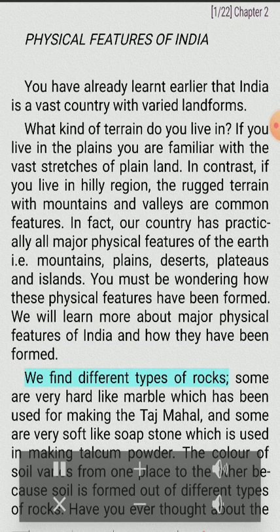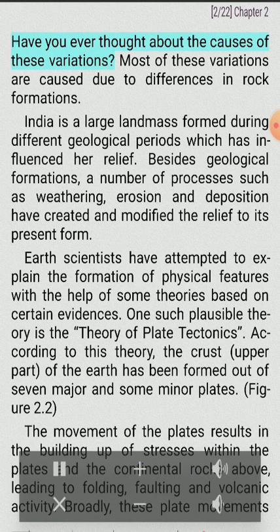We find different types of rocks. Some are very hard like marble, which has been used for making the Taj Mahal, and some are very soft like soapstone, which is used in making talcum powder. The color of soil varies from one place to another because soil is formed out of different types of rocks. Most of these variations are caused due to differences in rock formations. India is a large landmass formed during different geological periods which has influenced its relief.